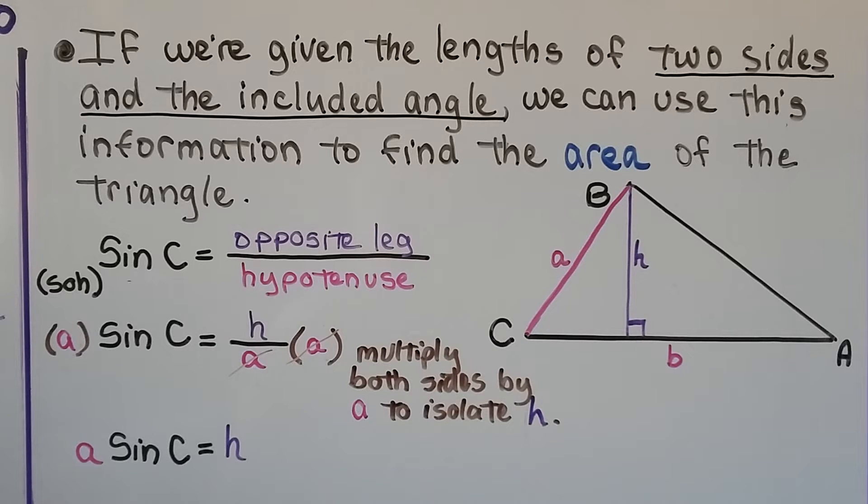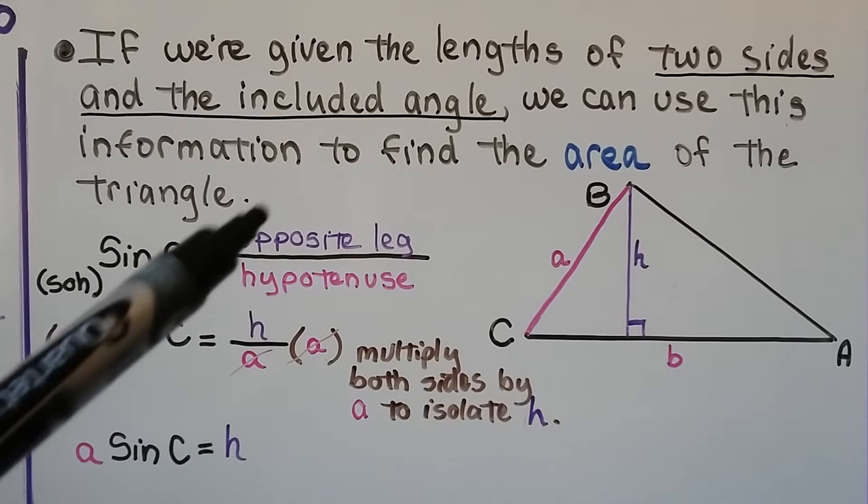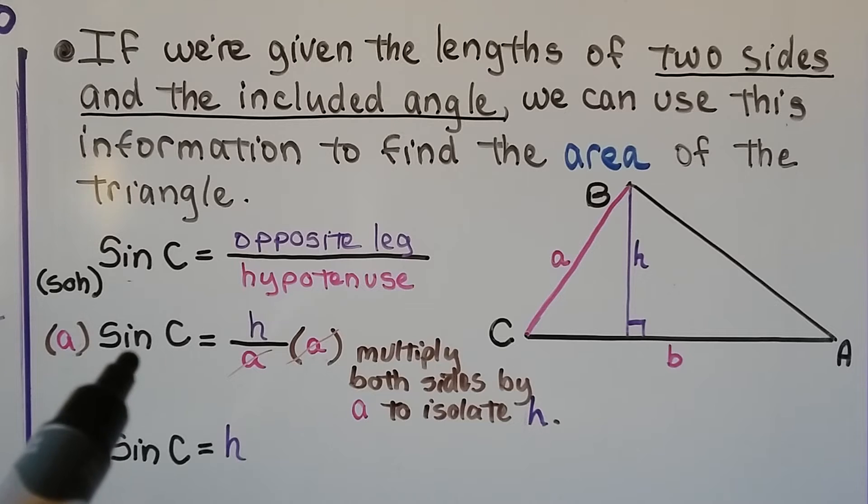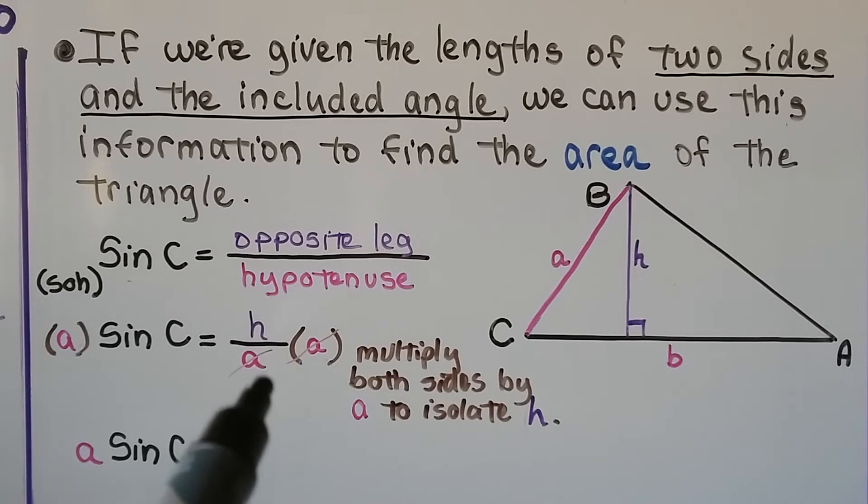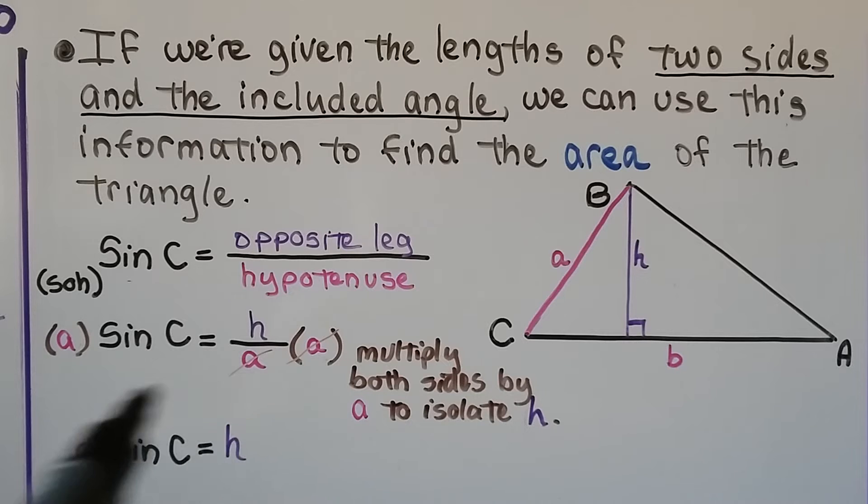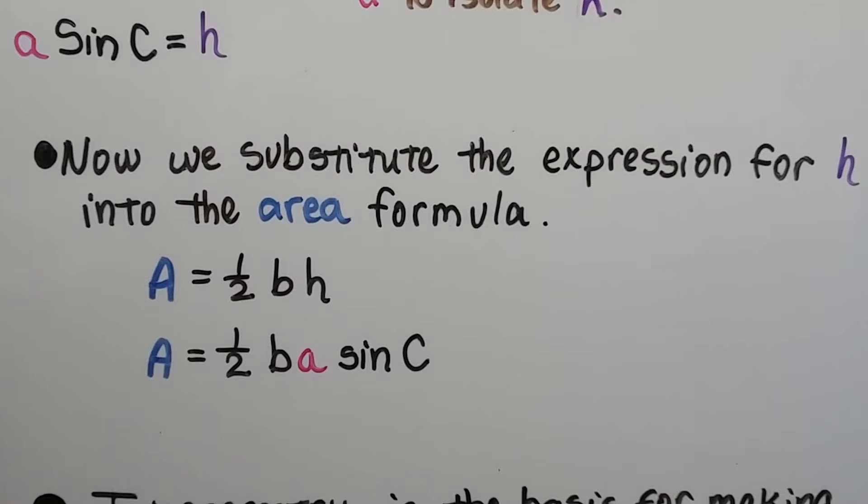So that's going to be the sine of c. Remember, Sohcahtoa, so that's going to be the opposite over hypotenuse. So what we can do is multiply both sides by this a denominator, and that one cancels that one, and we're left with a sine of c is equal to h.